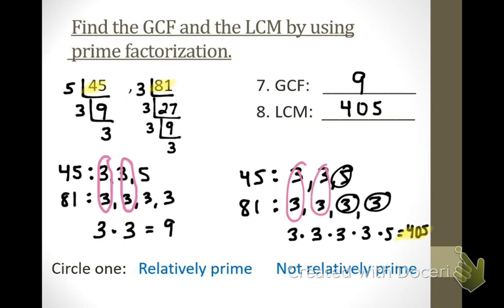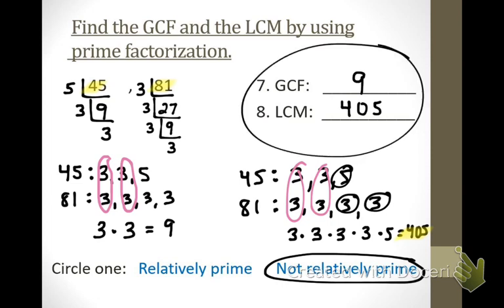So the GCF is 9 and the LCM is 405. Are these relatively prime or not relatively prime? They are not relatively prime. What does the GCF have to be for something to be relatively prime? It has to be 1 — and clearly these answers are not 1. Please make sure for your quiz you understand the difference between relatively prime and not relatively prime.